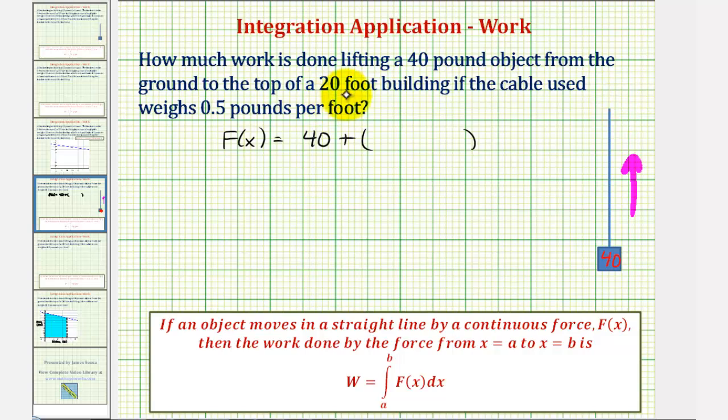Notice it starts at 20 feet long, and if it weighs 0.5 pounds per foot, 20 times 0.5 would be 10. So the cable starts at 10 pounds, but then it loses 0.5 pounds per foot, so we'd have to subtract 0.5 times x, where x is the number of feet.